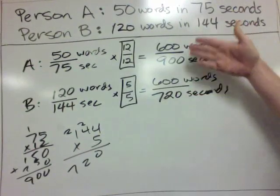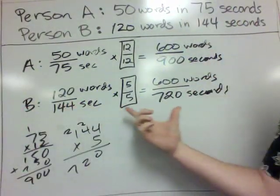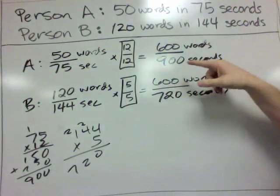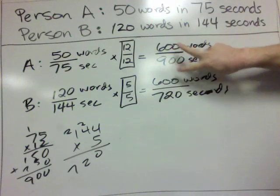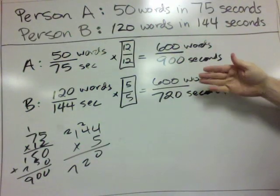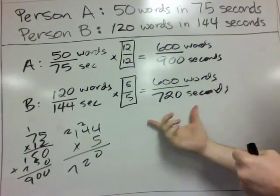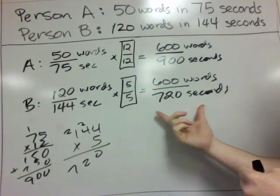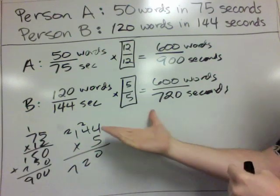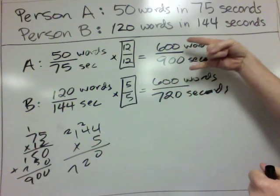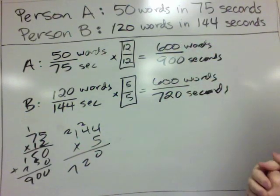So it's really easy to see that person B is faster, because they both type 600 words, but person A needs 900 seconds to do it, while person B only needs 720 seconds. So person B is faster, and we know because we've got common numerators.